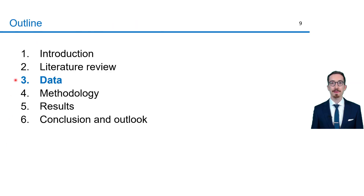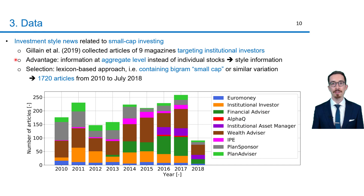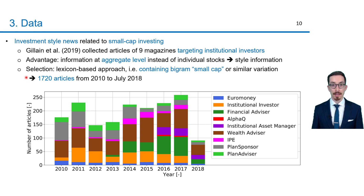So let's now focus on our specific data. This data consists of investment style news related to small cap investing. More precisely, Gillian and colleagues created a unique corpus by collecting the articles of nine magazines targeting institutional investors, which are listed here on the right. Articles related to small cap investing are then selected from this initial corpus by a lexicon-based approach — meaning articles containing the bigram 'small cap' or a similar variation are selected. In this way, I ended up with 1720 articles from 2010 to July 2018.